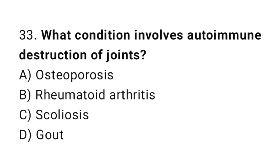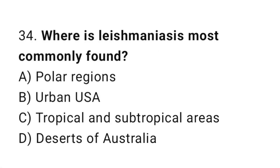Question number thirty-three: what condition involves autoimmune destruction of joints? The correct answer is B, rheumatoid arthritis. Question number thirty-four: where is leishmaniasis most commonly found? The correct answer is C, tropical and subtropical areas.